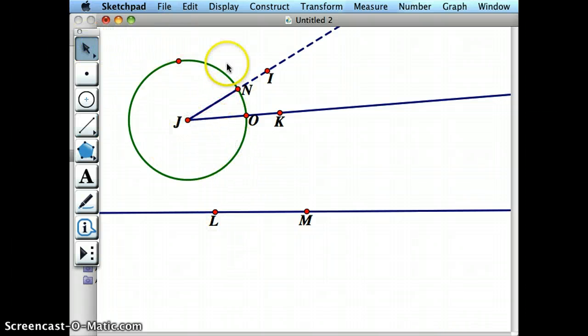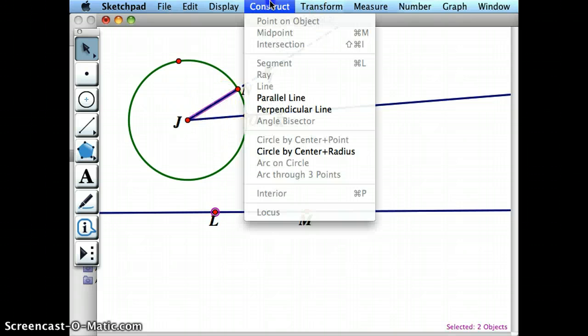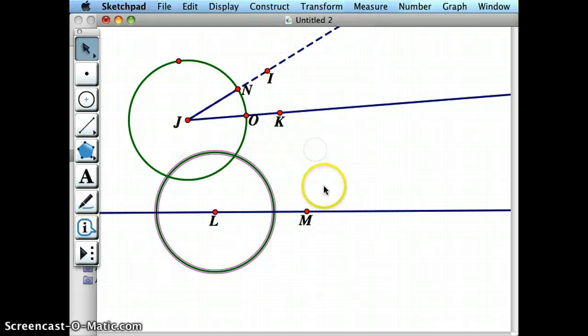So now to do the same circle down here, I'll click on the center of the circle, L, click on the radius of the circle that I want it to be and then construct circle by center and radius.